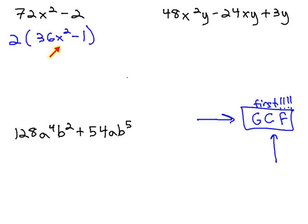Now that we've taken care of the GCF, I'll look inside to see if it can factor any more. When I see that squared, I'm thinking difference of squares because it's also subtraction. Sure enough, the square root of 36x squared is 6x, and the square root of 1 is 1.